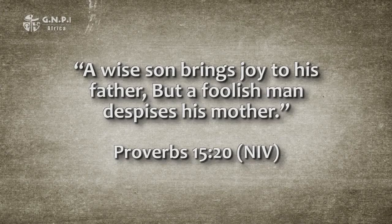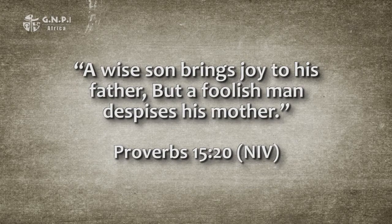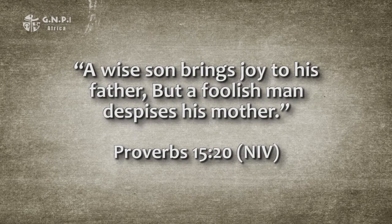Another antithetical proverb is found in chapter 15 verse 20: 'A wise son brings joy to his father, but a foolish man despises his mother.' The wise son and foolish man are contrasted by how they affect their parents. For the Hebrew sages, a wise and godly son brings great joy to his parents, while the foolish son — meaning wicked and rebellious — despises his mother. Every parent can understand the truth of this proverb. It reflects a relational principle shared between parents and their children — a truth about humans, no matter what culture they come from.